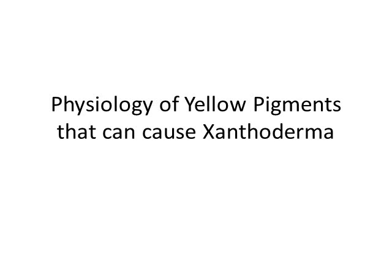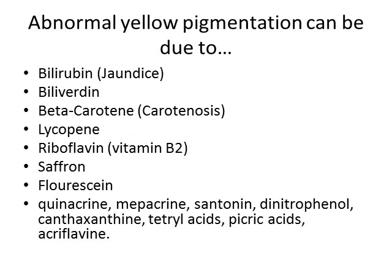Where does all this yellow pigment come from? An abnormally yellow patient can be abnormally yellow due to one of the following pigments: bilirubin, which is the main pigment involved in jaundice; biliverdin; beta-carotene, which is present in a disease called keratinosis, usually due to overeating carrots and other orange-colored fruits and vegetables; lycopene, which is a yellow pigment found in tomatoes and various other fruits and vegetables, also usually due to overeating.